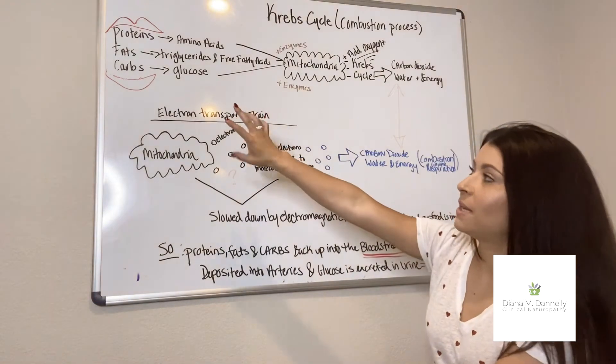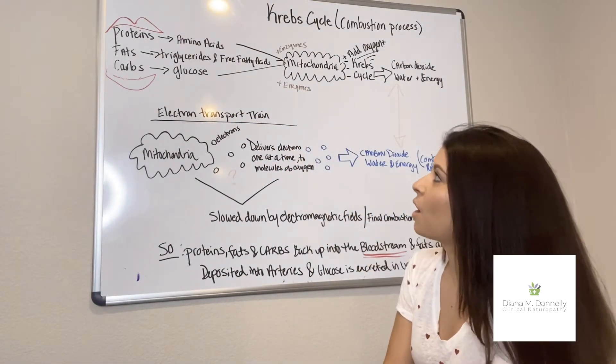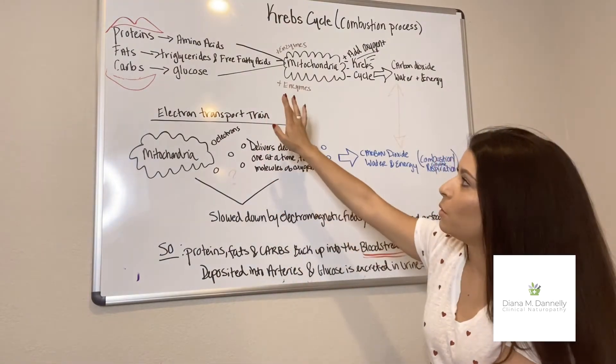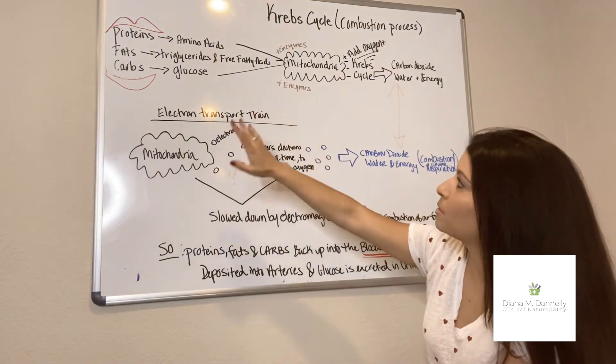Basically, we ingest three basic food groups, which is protein, fats, and carbs. Proteins are broken down into amino acids, fats into triglycerides and free fatty acids, and then carbs into glucose.